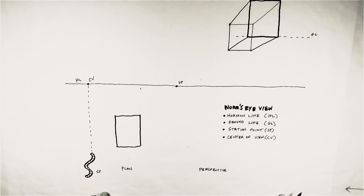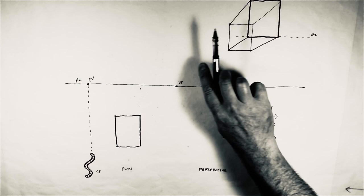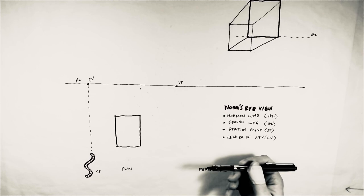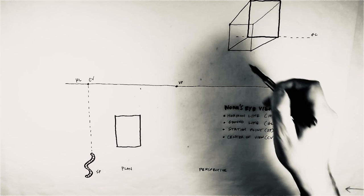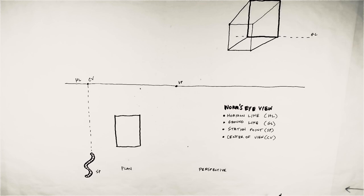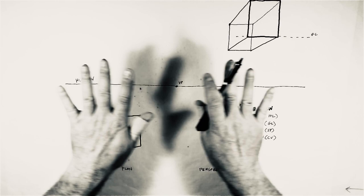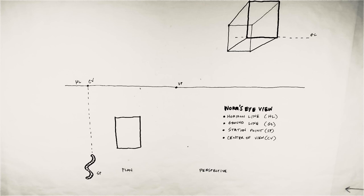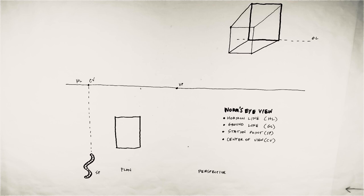Now we're going to move through one point and two point perspectives this semester. The ones I've just showed you are one point perspectives. All the faces that are parallel with the horizon line are sort of flat and parallel to our view, and all the faces that are perpendicular to that horizon line are the ones that are going to be at that oblique angle, vanishing towards the vanishing point. That's the difference between the one and the two point perspectives. It's not necessarily how we see things in real life, which is why the two point perspective, I think, is a better way to visualize architecture. But we'll get to that in a week, week and a half.